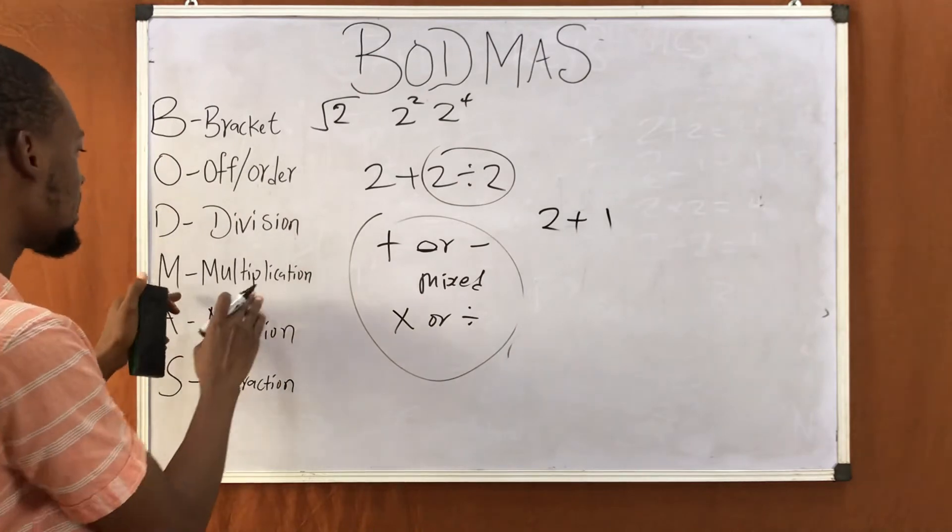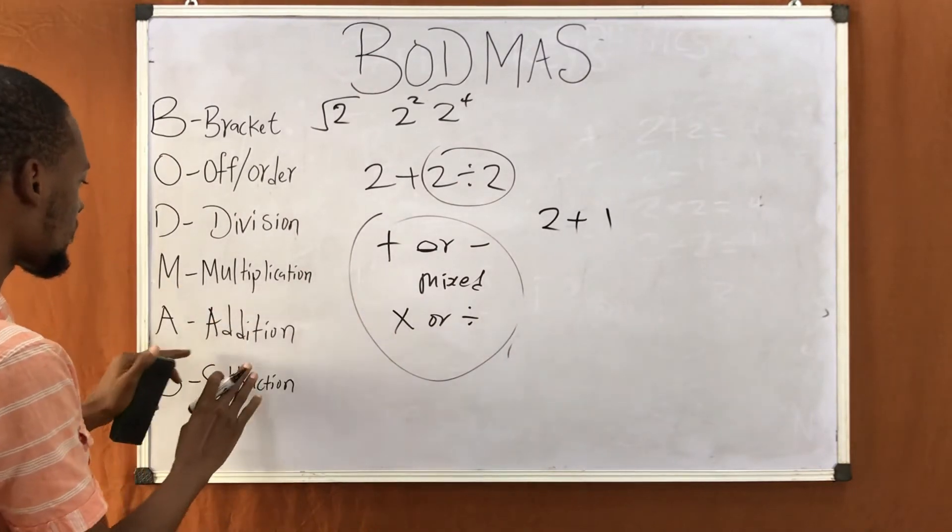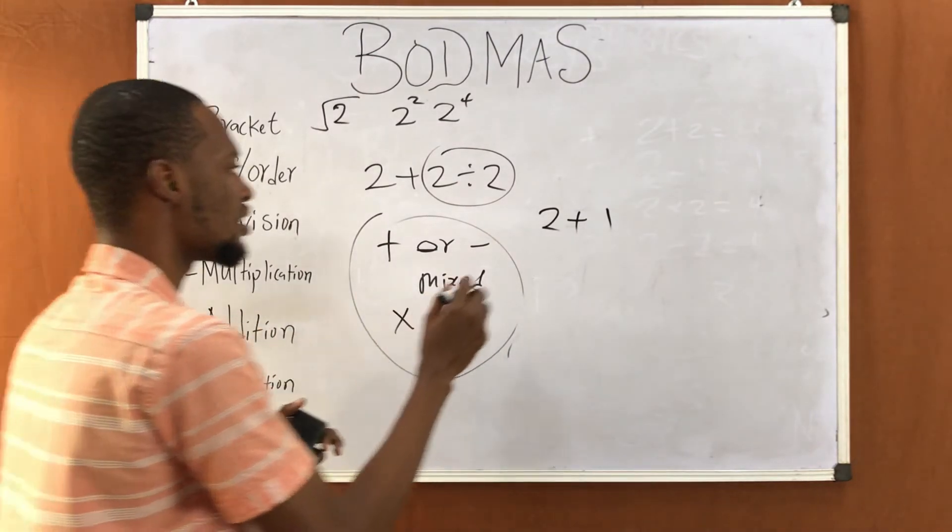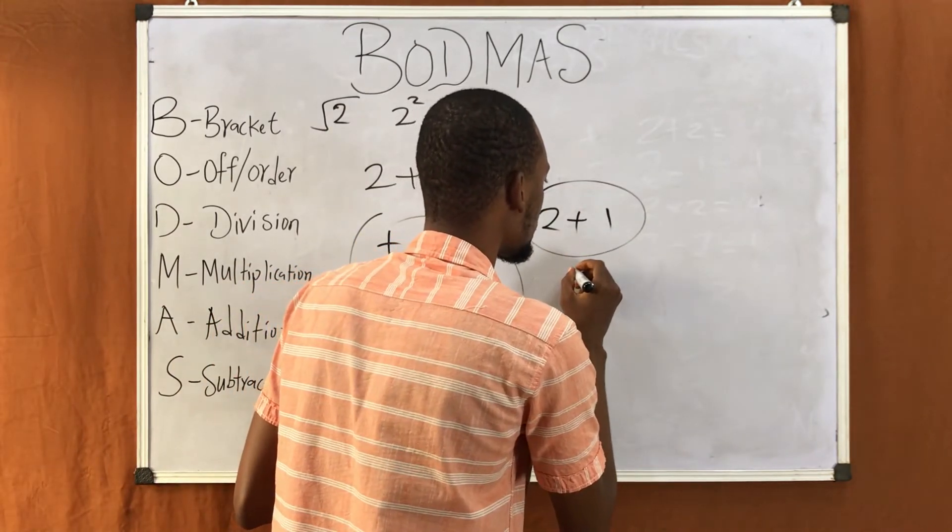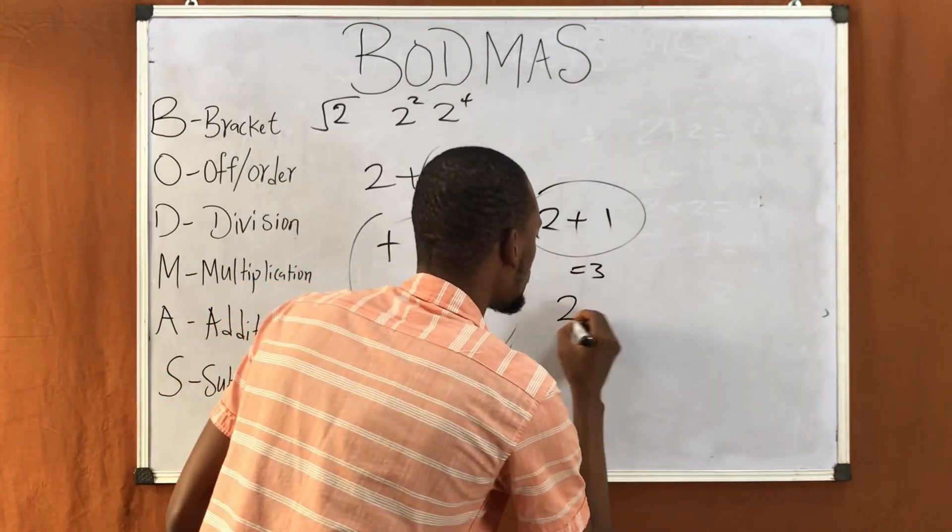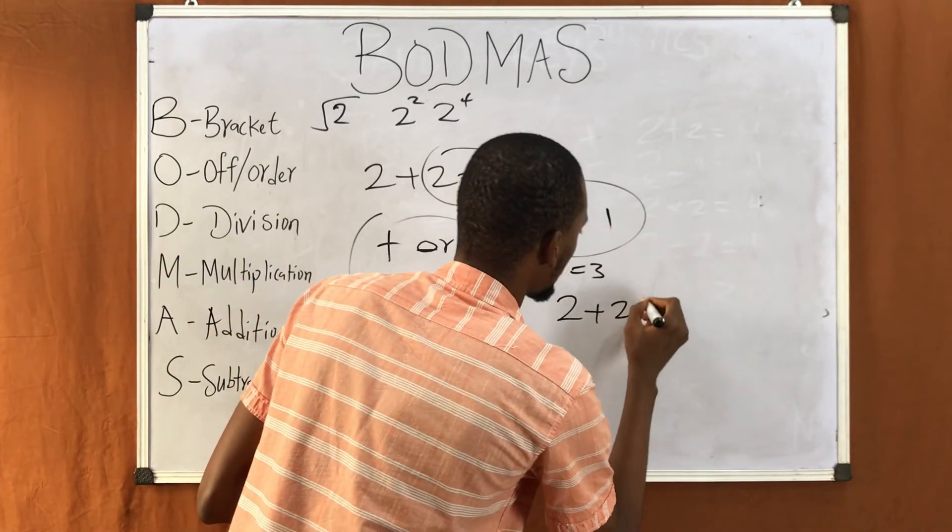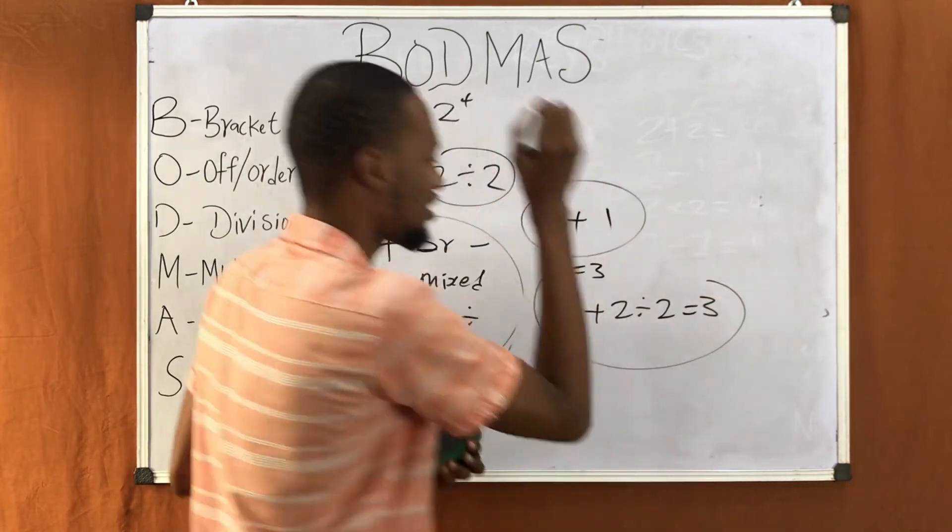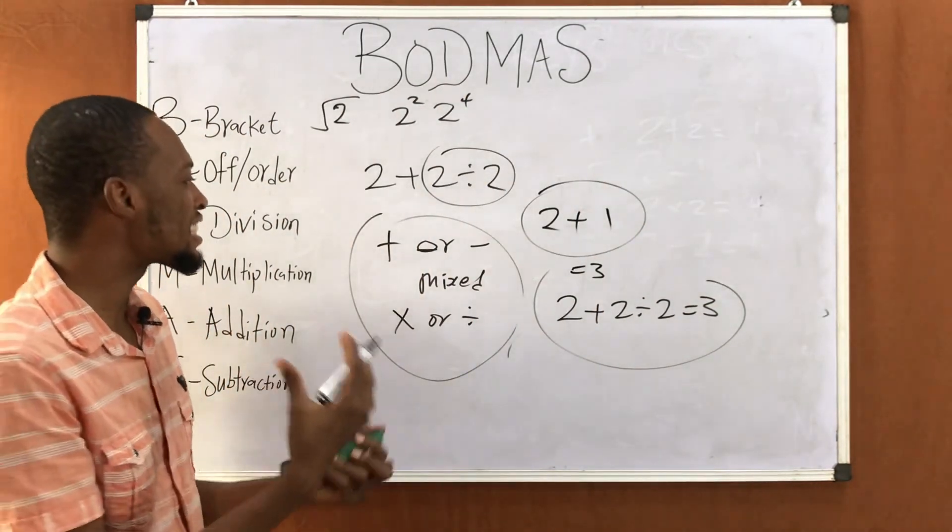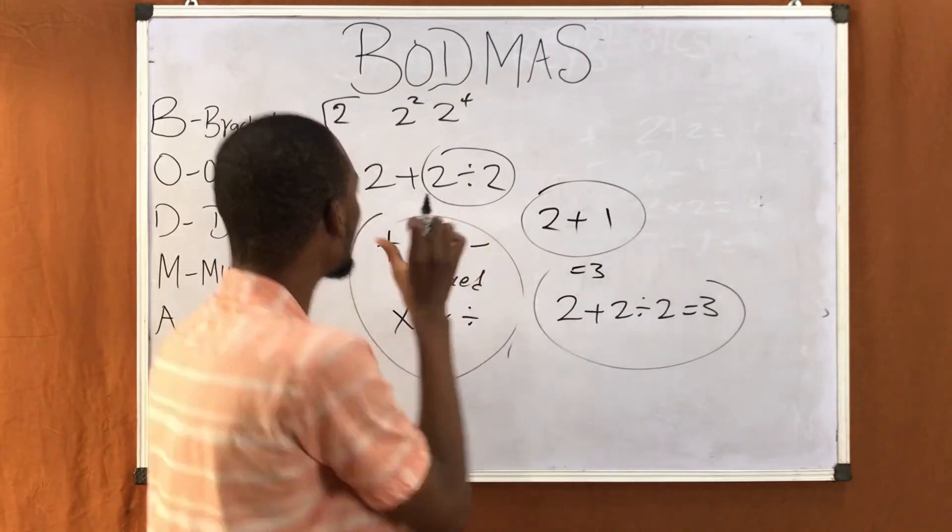So we solve for division. Then next, is there multiplication? No. Is there addition? Yes. So addition: two plus one is three. Therefore, two plus two divided by two equals three.